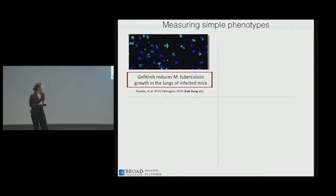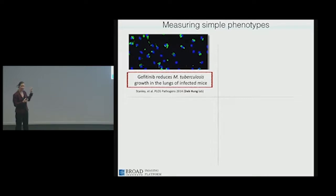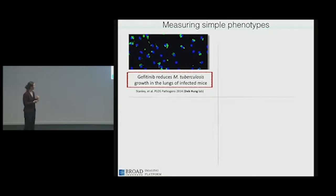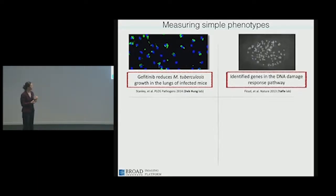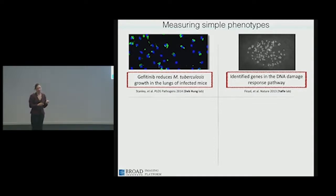A few examples: counting GFP-labeled tuberculosis in a mouse macrophage system to find antibiotics that allow macrophages to survive infection—potentially working by interesting new mechanisms of action, which are sorely needed. That was a project with Deb Hung's lab. A much higher resolution project involved gamma irradiation in an oncology project aiming to identify genes in the DNA damage response pathway with Mike Yaffe's lab—the goal was to count up the speckles produced after irradiation and DNA damage is induced.